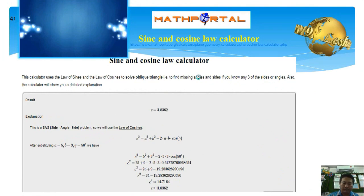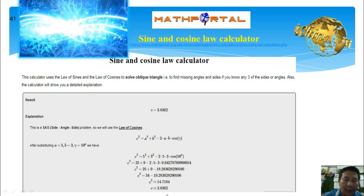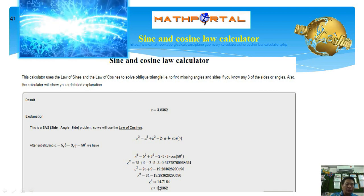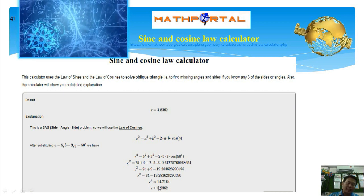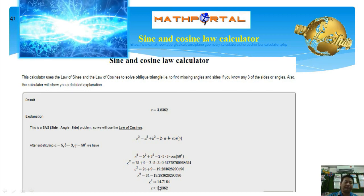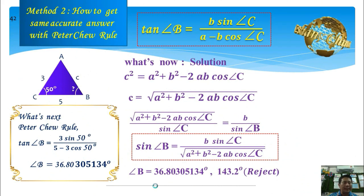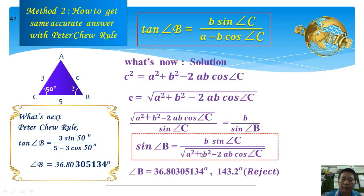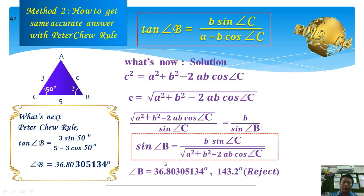The online calculator Wolfram Alpha uses only five significant figures, giving 3.8362, so the final answer will also be inaccurate when using cosine rule plus sine rule with this calculator. Another method is to use sine b equal to b sine C divided by the square root of a² plus b² minus 2ab cosine C — derived from cosine rule plus sine rule — but this formula is more difficult for high school students and still faces the acute or obtuse angle ambiguity problem. Therefore, using Peter Chiu Rule is the better method.